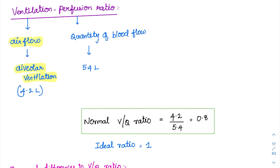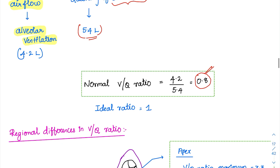Coming to perfusion — perfusion is nothing but the quantity of blood flow, how much blood is flowing into the lungs. The normal quantity of blood flow is around 5.4 litres. The ventilation-perfusion ratio between these two comes to around 0.8. This normal value is 0.8 but the ideal would be 1, meaning the exact amount of ventilation is happening for the exact amount of perfusion.